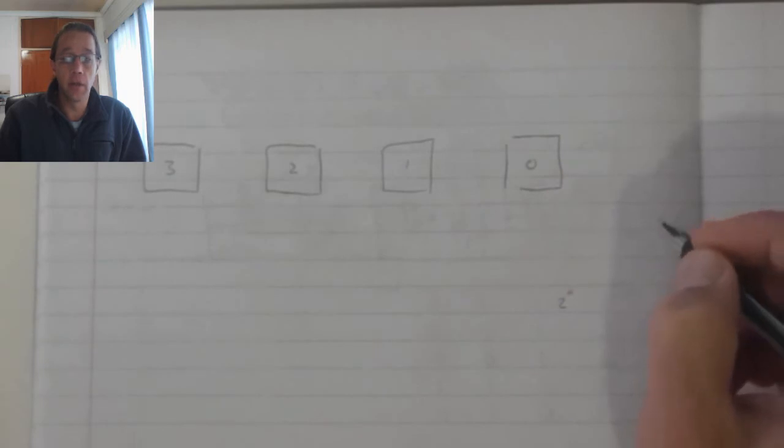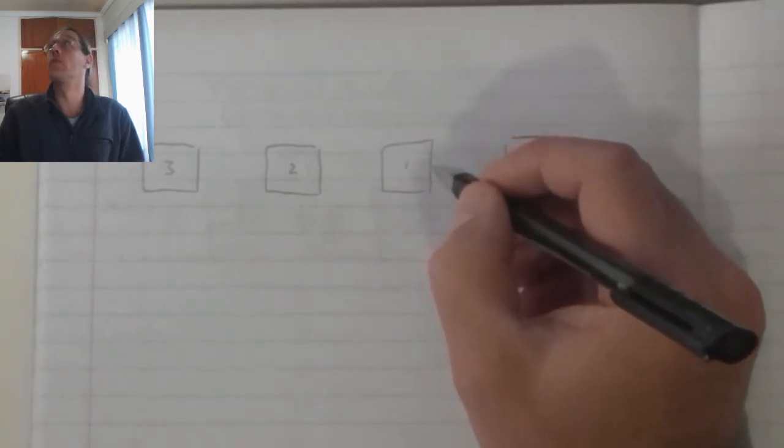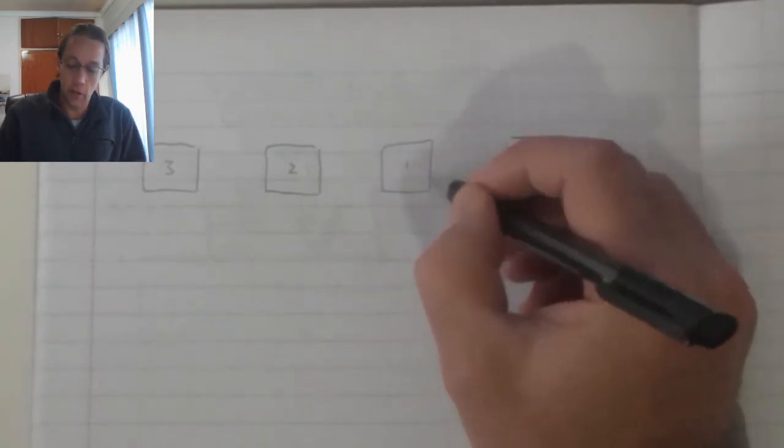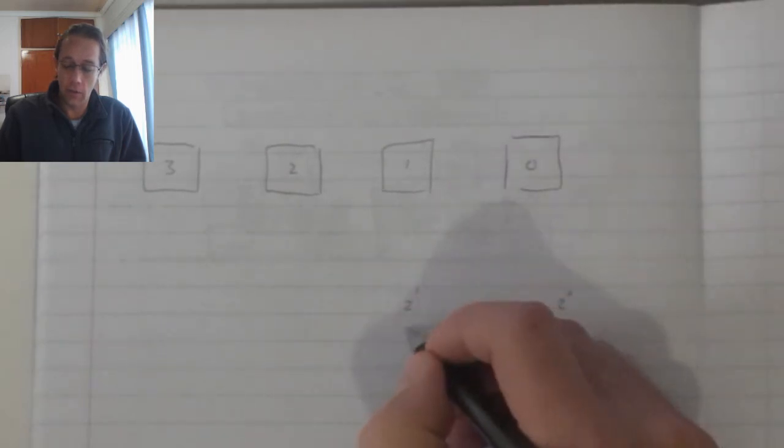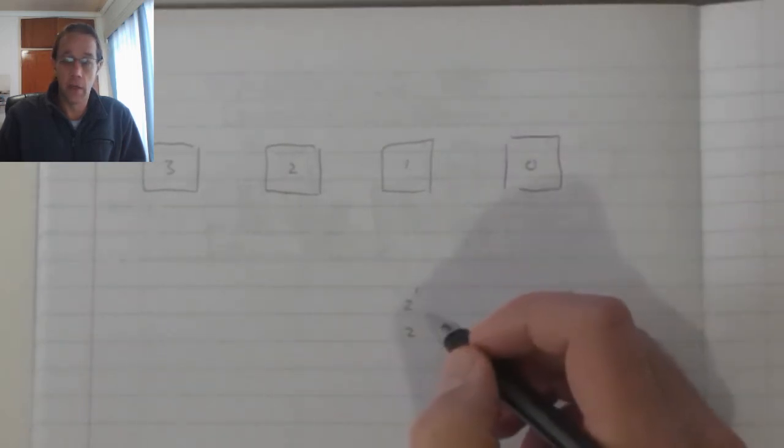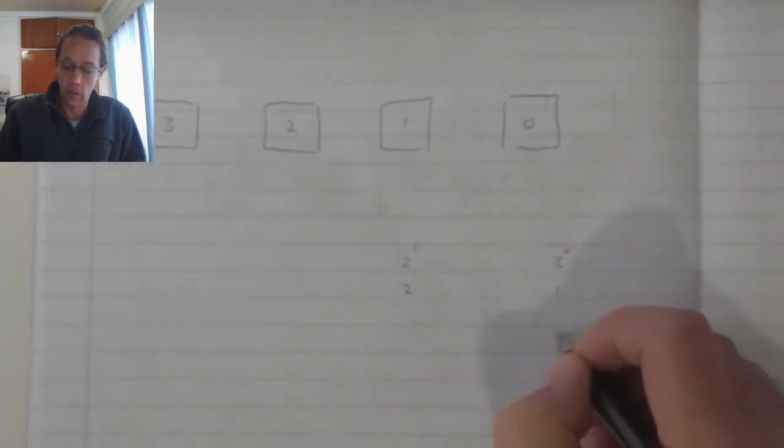2 to the power 0 means every 1 pulse it will flip or toggle. The second one is number 1, so every 2 to the 1 pulses, so after every second pulse it will change. We can see that from the truth tables that we draw.